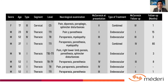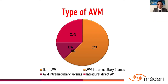A total of eight patients were included in the analysis, where seven of them were male and seven of them had thoracic spinal cord lesions. In our case series, the most frequent Spinal Arteriovenous Malformation was type 1 or Dural AVF. The second most common was type 4 or Intradural Direct AVF.